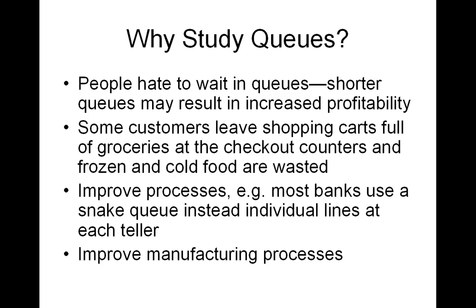For example, about 30 years ago, most banks had a line or queue at each cashier. Then they figured out with queuing theory that they'd be better off using a snake queue instead of individual lines. You can also use queuing theory for improving manufacturing processes as well.